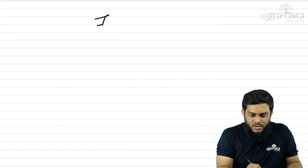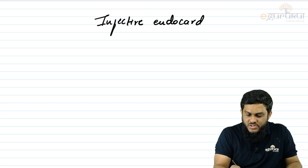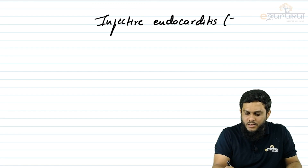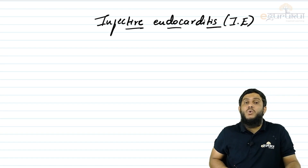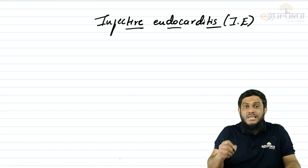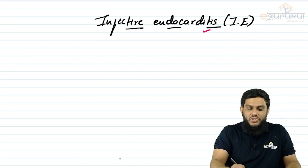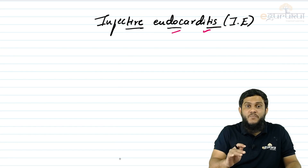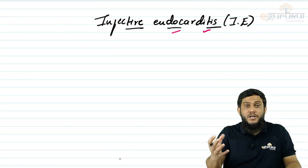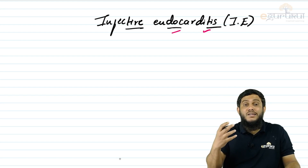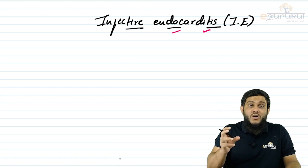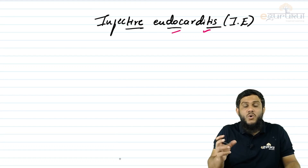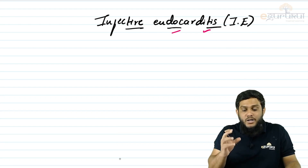Let's discuss infective endocarditis, shortly known as IE. The term 'endocarditis' means inflammation of the endocardium, which is the inner layer of the heart. The heart consists of three layers: the outer layer is the pericardium, the middle layer is the myocardium, and the inner layer is the endocardium. Inflammation of that inner layer is called endocarditis.